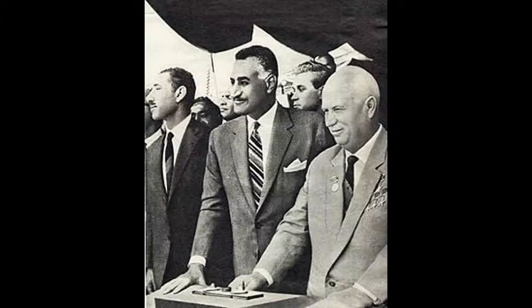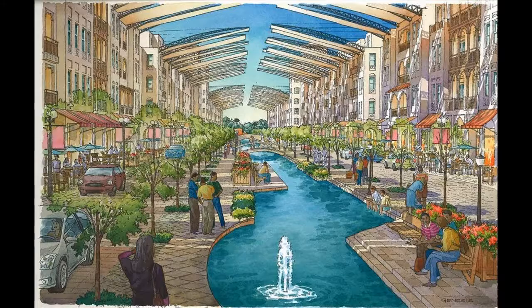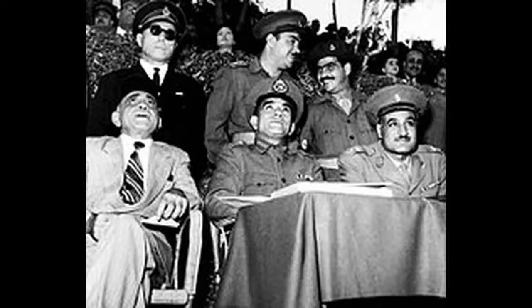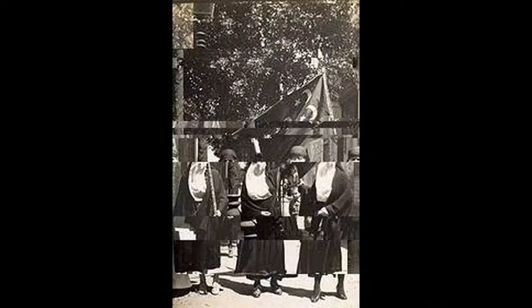Finally, on 19 October, Nasser signed a treaty for the evacuation of British troops from Egypt, to be completed over the following 20 months. The original revolutionaries wanted an end to British occupation but did not have a unified ideology or plan for Egypt.